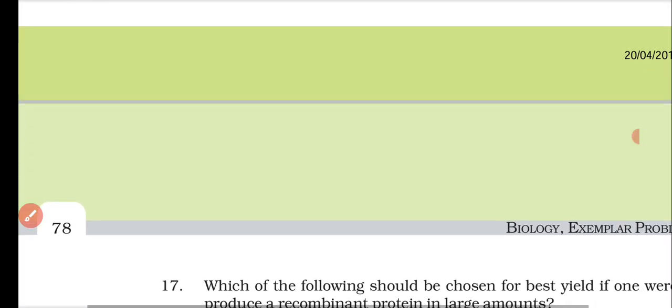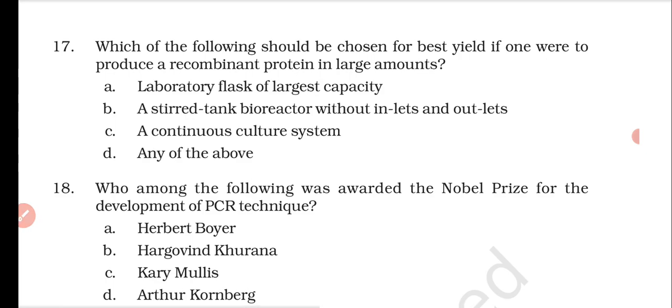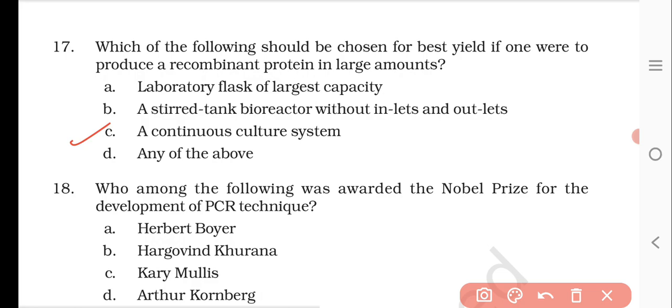Question number seventeen: which of the following should be chosen for the best yield if one were to produce a recombinant protein in large amounts? Options are a laboratory flask of largest capacity, a stirred tank bioreactor without inlets or outlets, a continuous culture system, or any of the above. For the best yield and large amounts, a continuous culture system is needed so that intake and outtake are easy and culture medium is always available. The right answer is C — a continuous culture system.